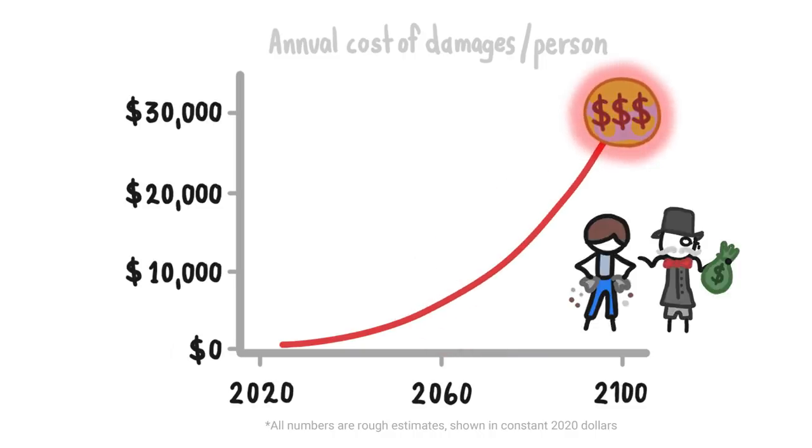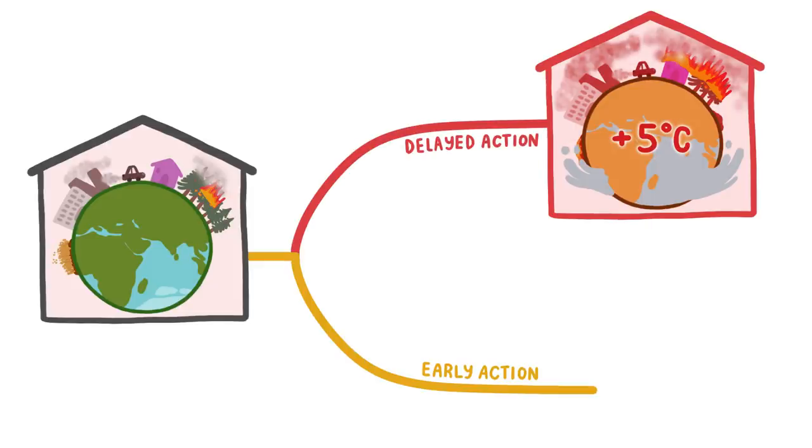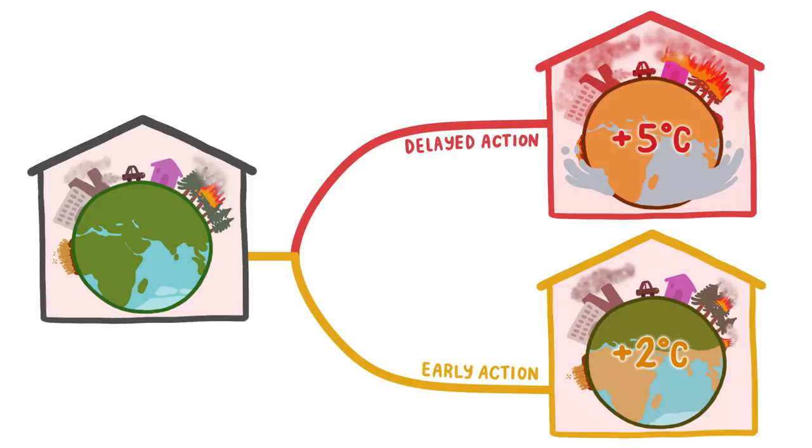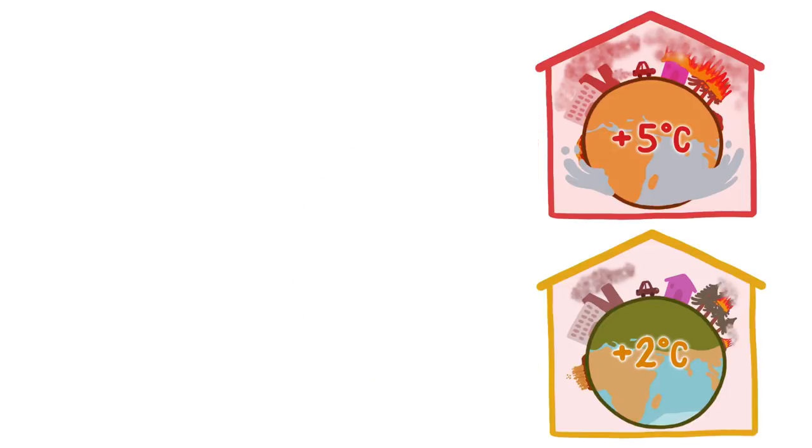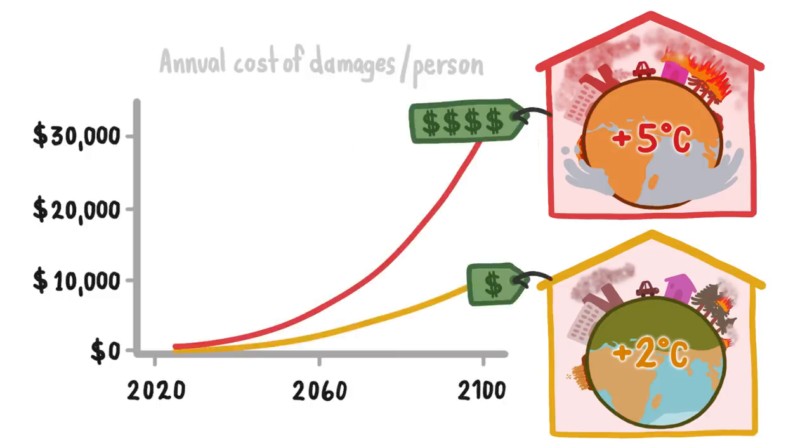Although they won't impact everyone the same way. Fortunately, if we limit warming to just 2 degrees Celsius, we can avoid most, but not all, of these disasters, and as a result, also avoid most of the economic damages.